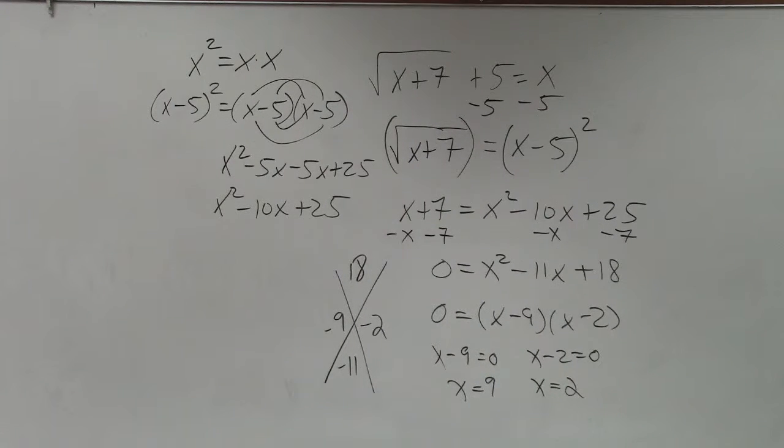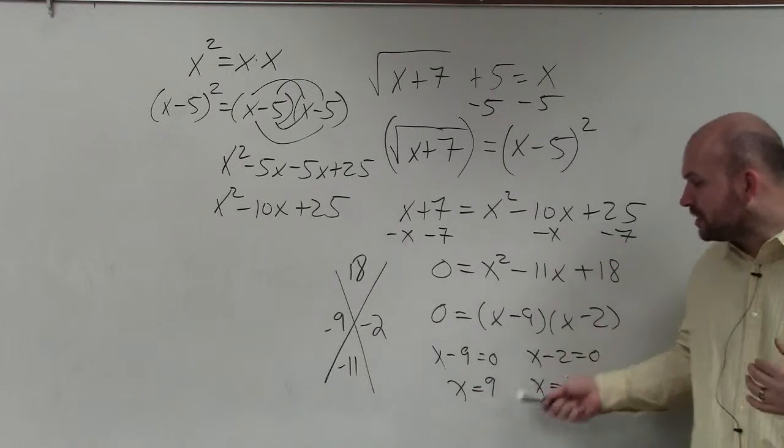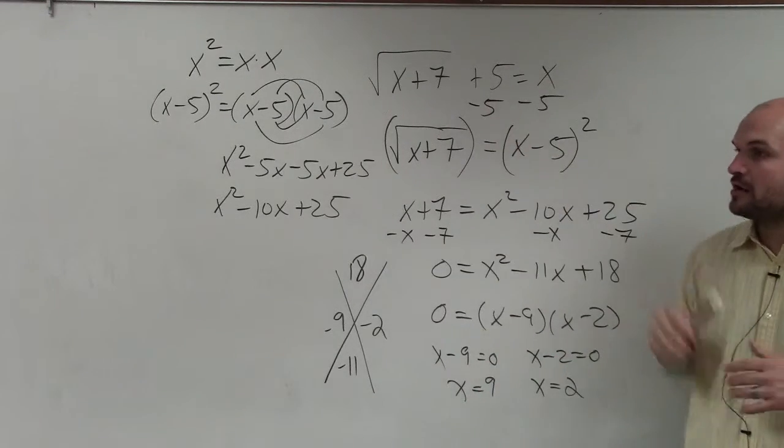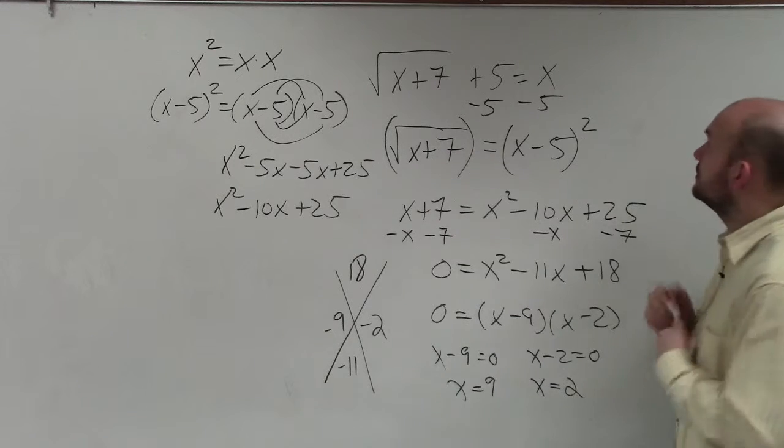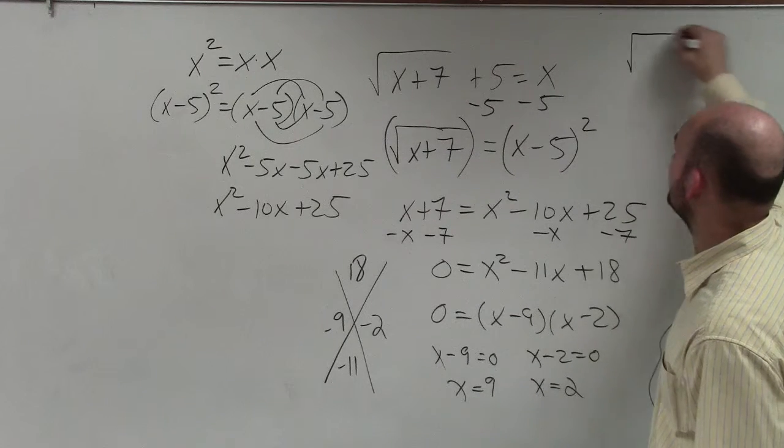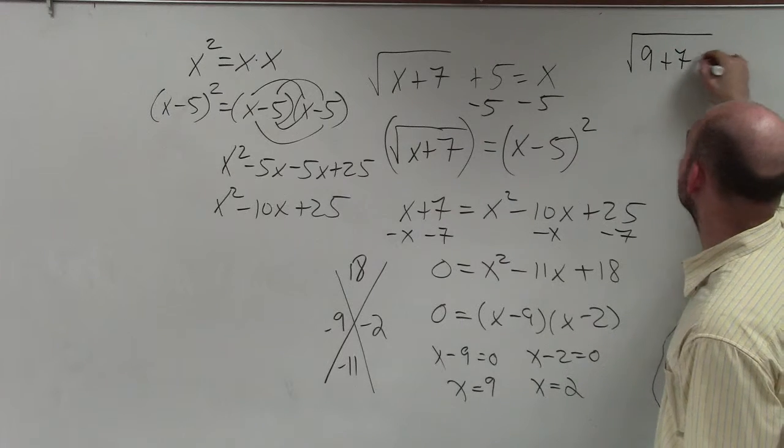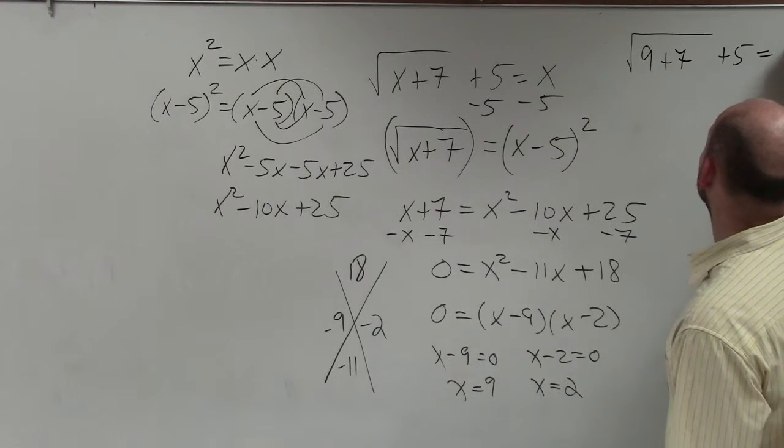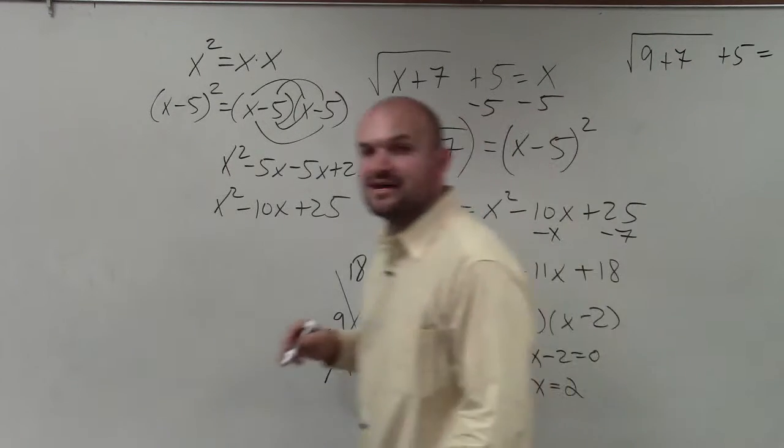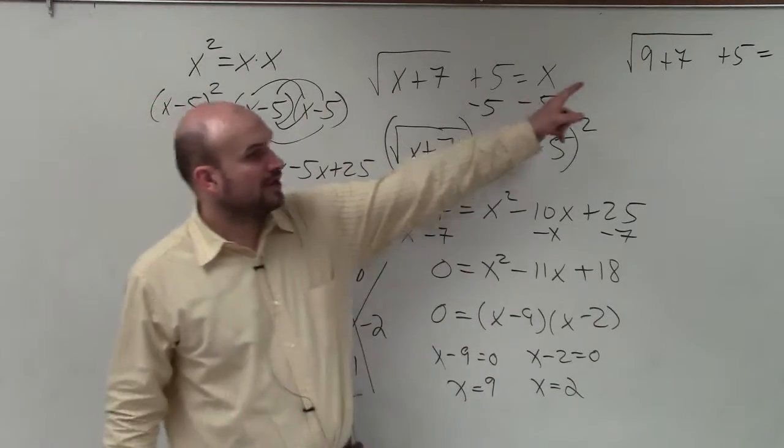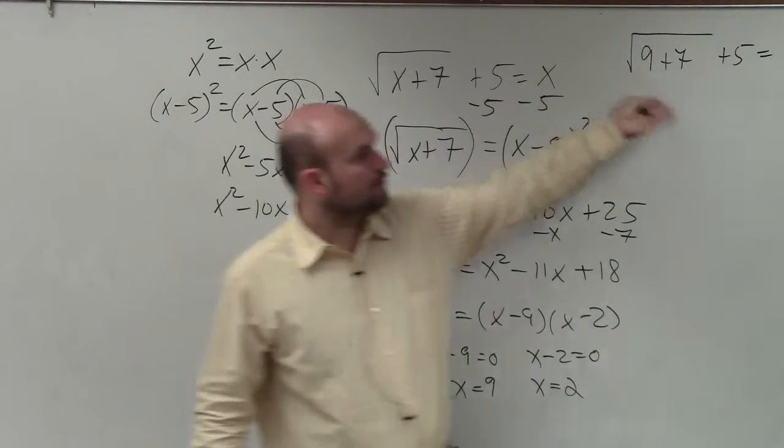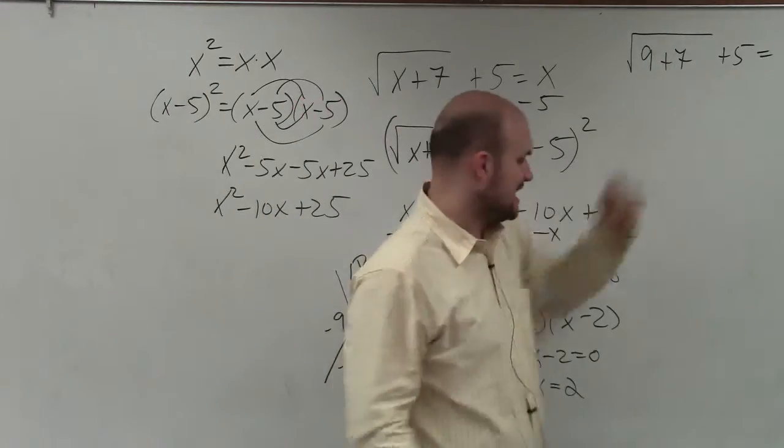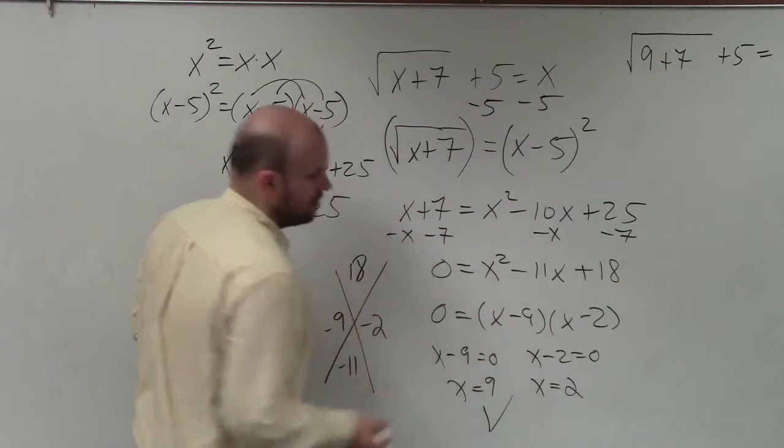So once you guys go ahead and solve the quadratic, now all we simply need to do is, again as I mentioned guys, we have to make sure we plug our answers back into our original equation. So because there are going to be ones that are not going to work, so let's do 9 plus 7 plus 5 equals 9. 9 plus 7 is 16. The square root of 16 is 4. 4 plus 5 is 9. 9 equals 9. So 9 works.